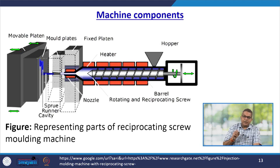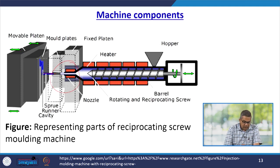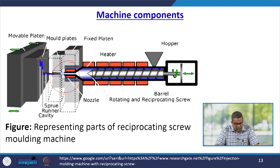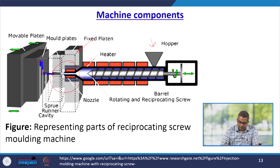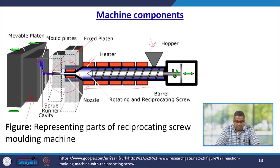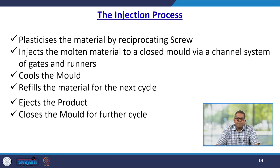Another integral part of the reciprocating screw moulding machine is the nozzle, through which the polymeric material is inserted into the mould. The mould plates work as a male and female system, with molten material passing through runners. Heaters and the hopper are also key components. By rotating or reciprocating motion, the material is passed through the heating zone to the nozzle zone and then to the mould zone.